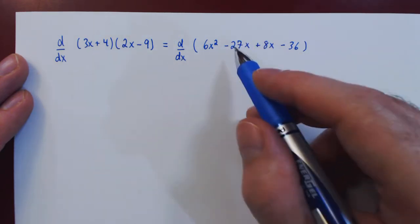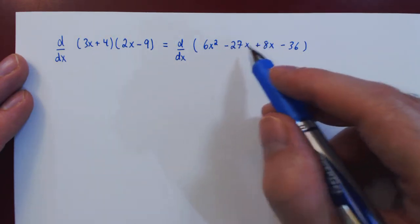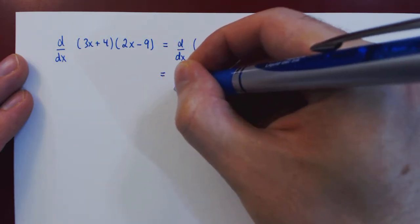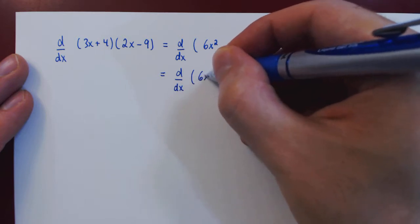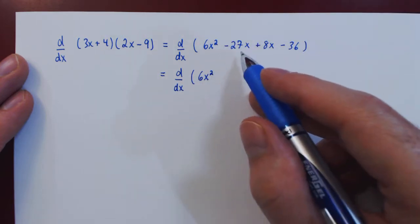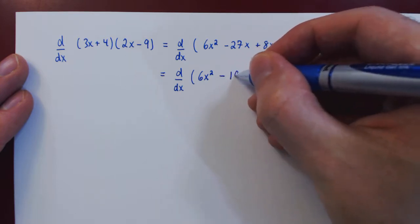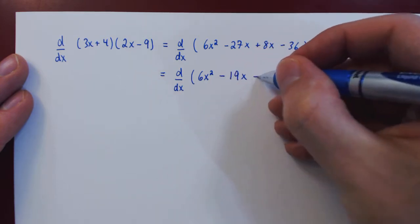Before we differentiate, we can now simplify these two multiples of x. Negative 27 plus 8 is negative 19. So negative 19x, negative 36.